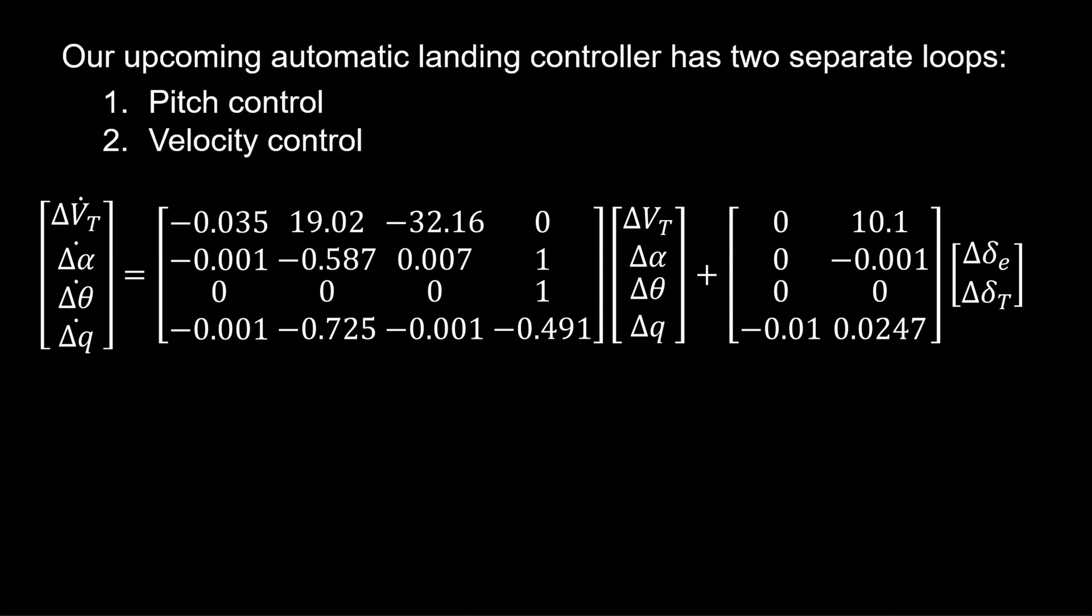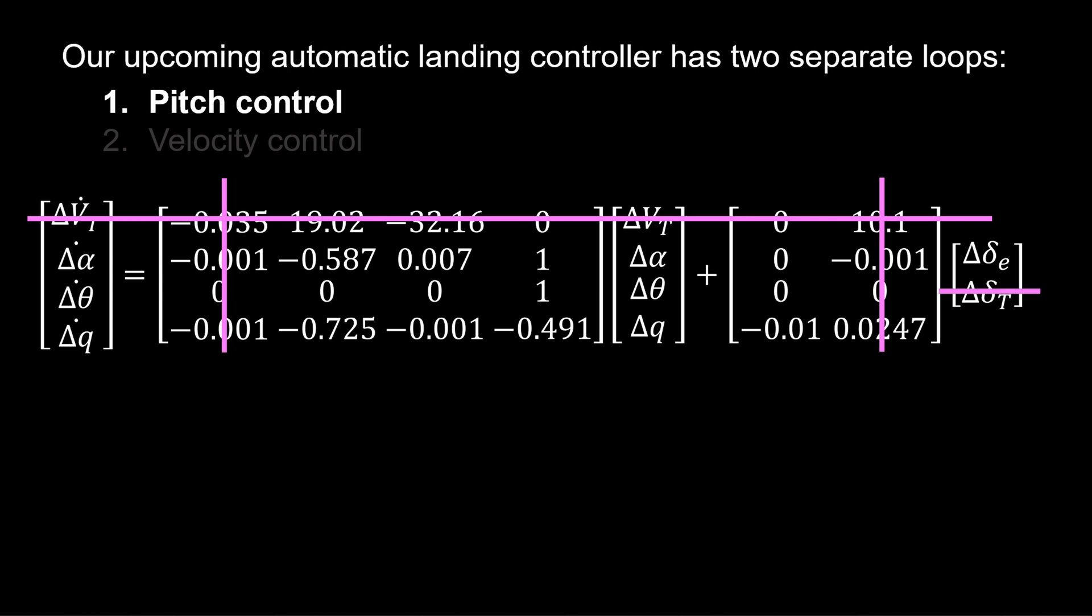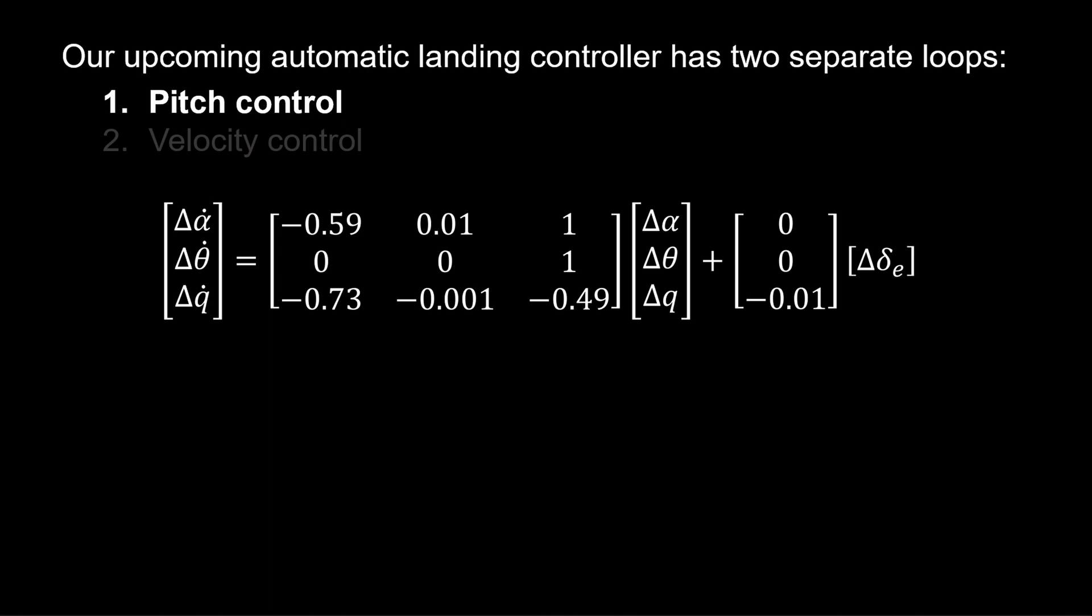Our approach to automatic landing control addresses pitch and velocity requirements with two separate loops. Here, we focus on pitch control and assume that we can decouple the velocity dynamics from the pitch dynamics. This leaves a three-state system that is effectively the short period with pitch angle as the integral of pitch rate.